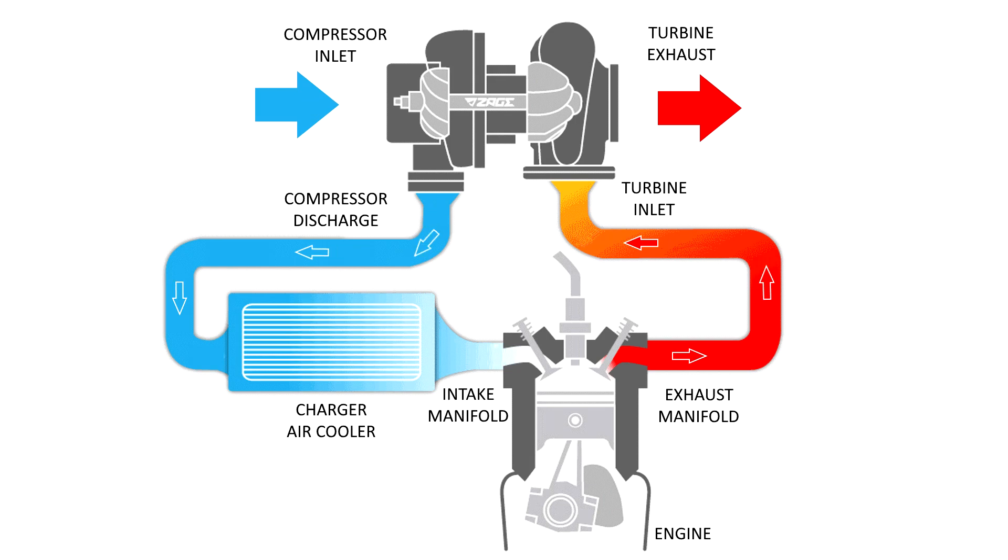In a traditional car turbocharger, there is a compressor wheel connected to a turbine wheel with a shaft, and both ends are connected to the engine with the compressor wheel creating a higher compression for the combustion of fuel and the turbine receiving the combustion exhaust to continue turning the compressor.